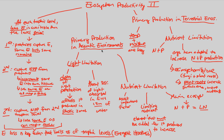Through this ecosystem productivity section, we've seen the trophic levels, the NPP, and the energy that continuously decreases, limiting the number of trophic levels. We've applied this to both aquatic and terrestrial ecosystems through the lens of nutrient limitations.